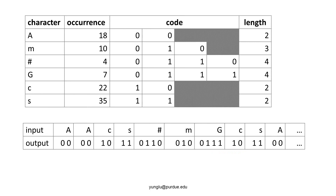Next, we will see how to use the codebook to convert an article composed of these characters. Consider the input: A, A, C, S, pound sign, M, G, C, S, A, etc. The output is the code of these characters: 0, 0 for A; 0, 0 for A; 1, 0 for C; 1, 1 for S; 0, 1, 1, 0 for pound sign; 0, 1, 0 for M; and so on.